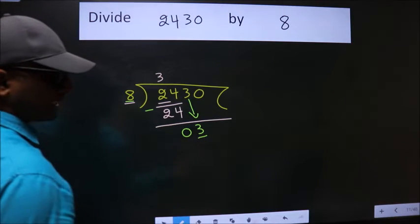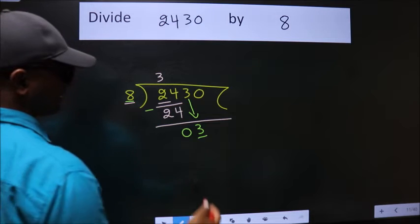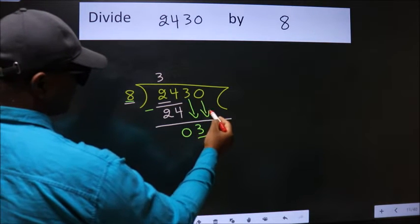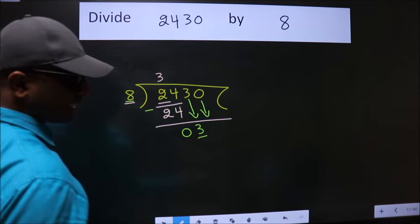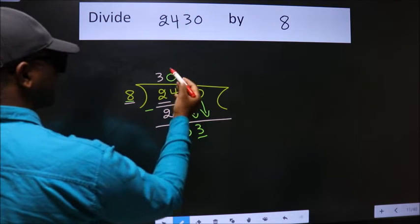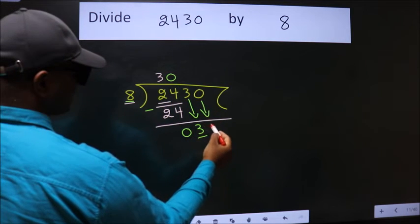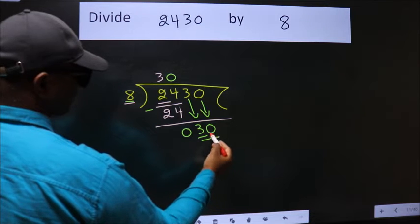So we should bring down the second number. And the rule to bring down second number is put 0 here. Then only we can bring down this number. So, 30.